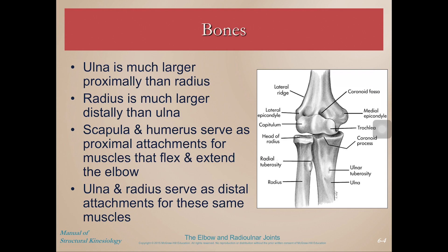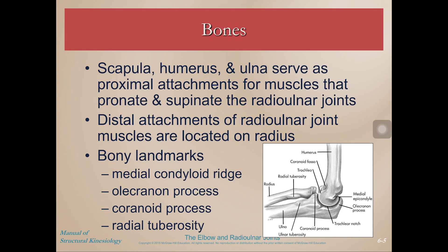It's important to note that the scapula and humerus serve as proximal attachments for muscles that flex and extend the elbow. If a muscle controls movement at the elbow, it has to cross the elbow, originating higher up the kinetic chain on the humerus or scapula. The radius and ulna serve as the distal attachments for those same muscles. For muscles that move the radial ulnar joint, both the scapula and humerus as well as the ulna serve as proximal attachments, while the distal attachment is on the radius.